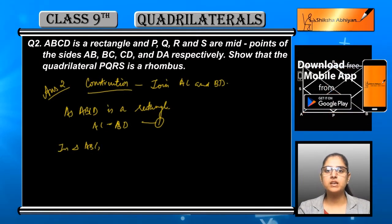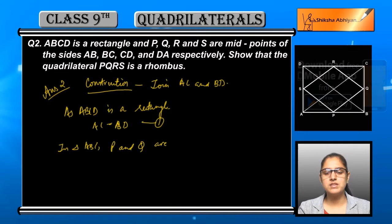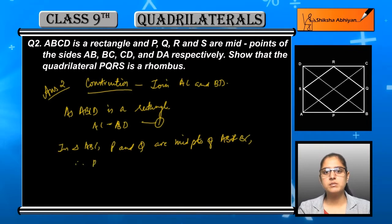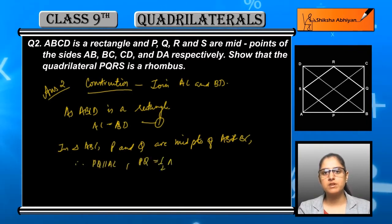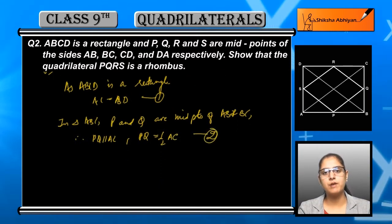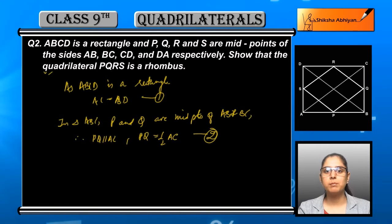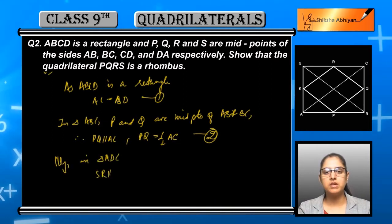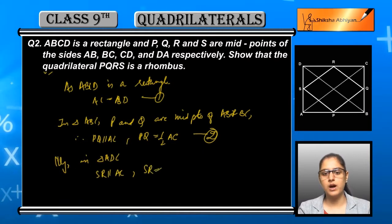Now we will consider triangle ABC. In this triangle, P and Q are midpoints — P is the midpoint of AB and Q is the midpoint of BC. By the midpoint theorem, PQ is parallel to AC and PQ is equal to half of AC. This gives us equation number two.